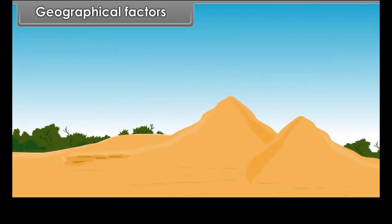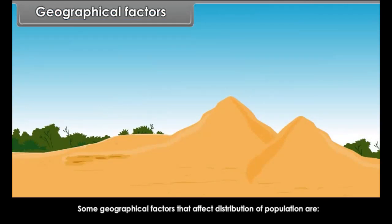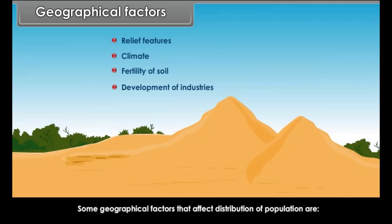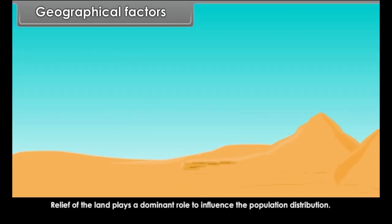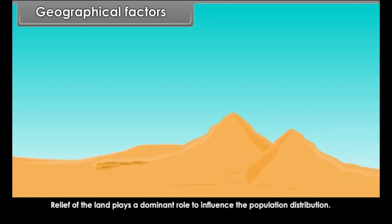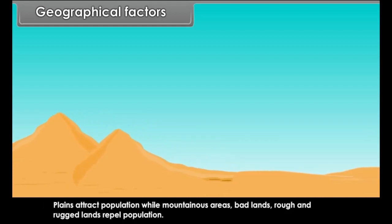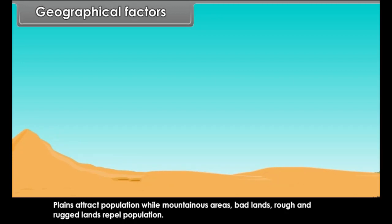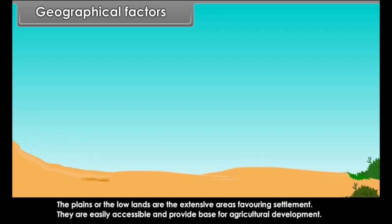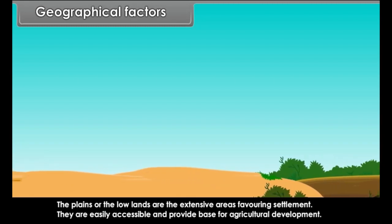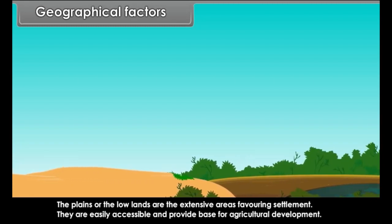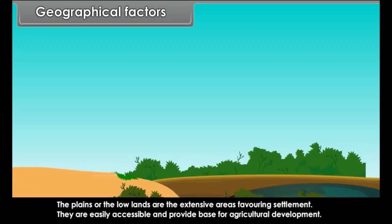Geographical Factors: Some geographical factors that affect distribution of population are relief features, climate, fertility of soil, and development of industries. Relief of the land plays a dominant role. Plains attract population while mountainous areas, bad lands, and rough and rugged lands repel population. Plains or low lands are extensive areas favouring settlement — they are easily accessible and provide a base for agricultural development.